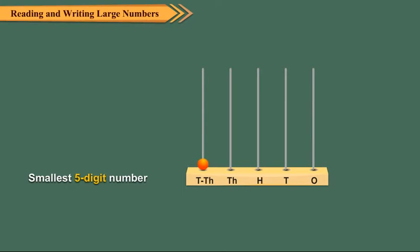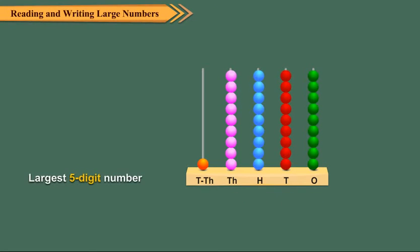Smallest five-digit number is 10,000. Largest five-digit number is 99,999.